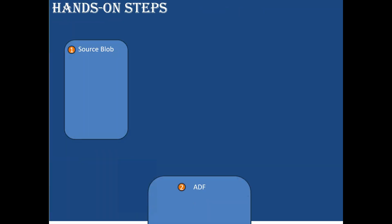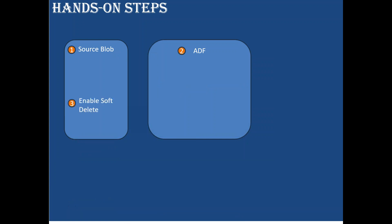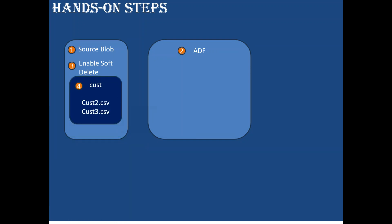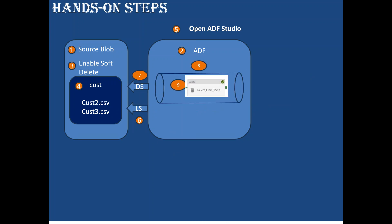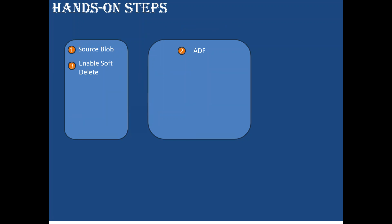Let's see the hands-on steps. I'll create a storage blob and ADF, then on the storage blob I'll enable soft delete. I'll show you how to enable it. We will create a container in the source blob, upload the respective files, then open ADF, create a linked service and datasets, then a pipeline. In the pipeline we will use the delete activity to delete the files, and then we'll see how to recover them through the portal.